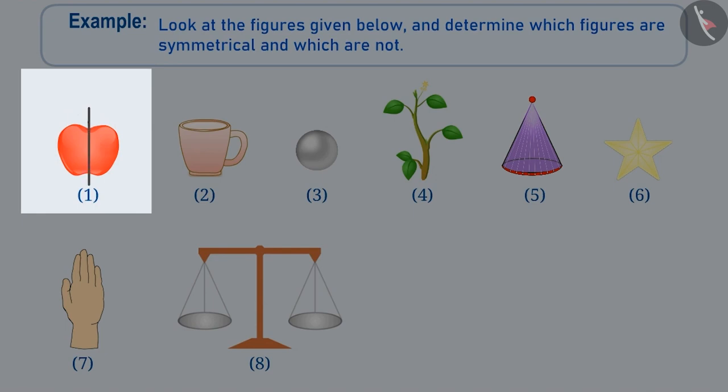We can make two parts of the first figure like this. Here we see that the right half and the left half are identical to each other. That is, they look exactly alike and thus, it is a symmetrical figure.